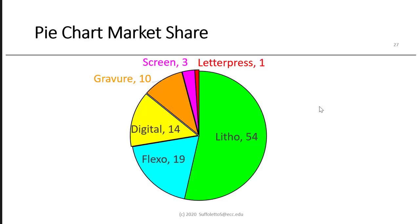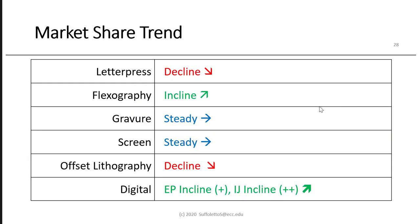Here's a pie chart representing market share for the printing processes. These numbers vary depending on the trade association or consultant referenced, but typically over 50% of everything printed is printed by offset lithography. Flexography is about 20%. Digital is 14% — though that seems high, the source may have been a digital association. Gravure is about 10%, screen is 3%, and letterpress is only 1%. For trends: letterpress keeps declining. Flexography is strong and growing because of flexible packaging. Gravure is holding steady. Screen is holding steady. Offset lithography is unfortunately in decline — taken away by flexography, packaging, and digital. Digital is in the incline, growing — especially inkjet.